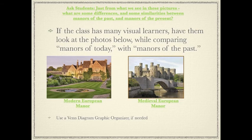Since many of my students are visual learners, I try to use as many photos as I can in my lessons. For this lesson, I am showing them a picture of a manor of today — maybe something you would find in the English countryside — alongside a picture of a manor from medieval Europe. I will ask them to compare and contrast the two pictures, and if they need to, they can use a Venn diagram graphic organizer.